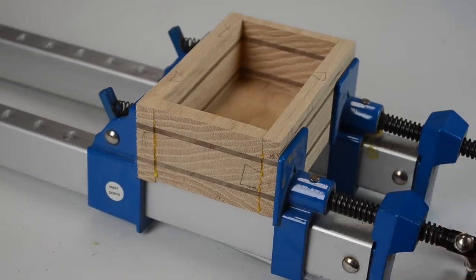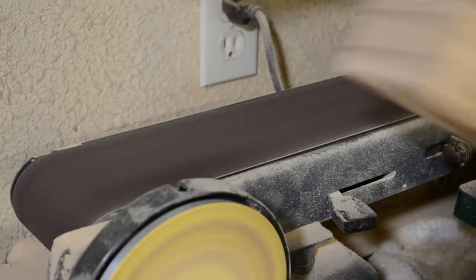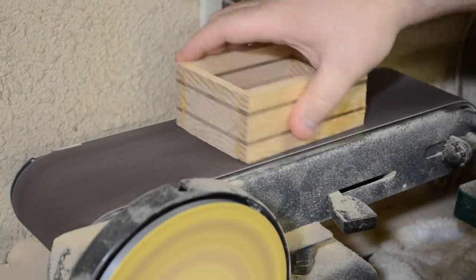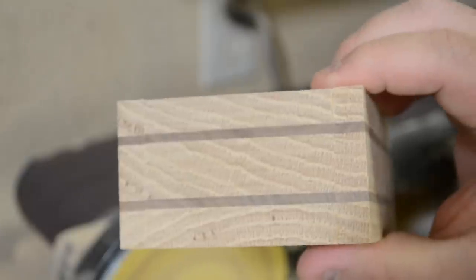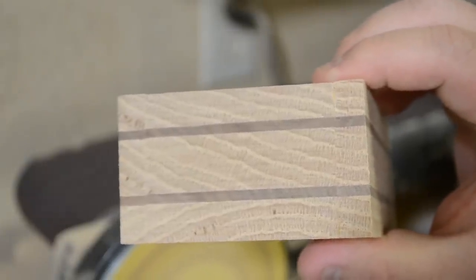Then once it was dried, I could take the box portion back to the belt sander and smooth up some of the surfaces. Here you can see the beginning, and then after the belt sander, it's nice and smooth and the glue lines almost disappear.